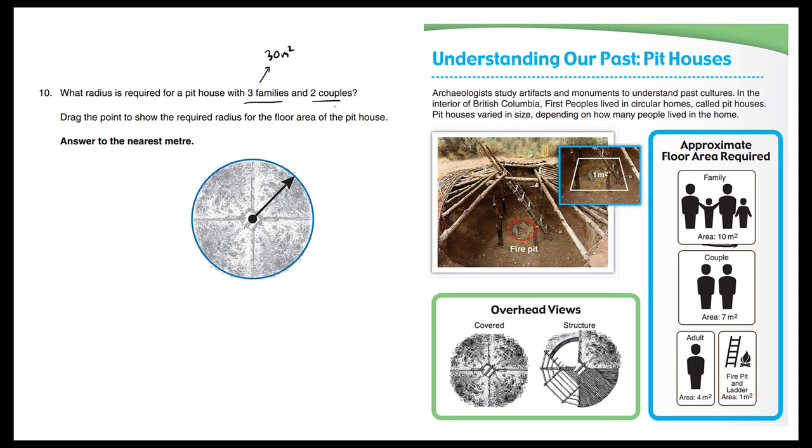Now what about the two couples? The couples here require 7 meters squared each couple. So 2 times 7 is going to be 14 meters squared required. Now this area should be enough to calculate the answer. But just to be careful, we remember that each pithouse also requires a fire pit and ladder, which requires a negligible 1 meter squared. So this 1 meter squared is so small that it's not going to really affect our computation.